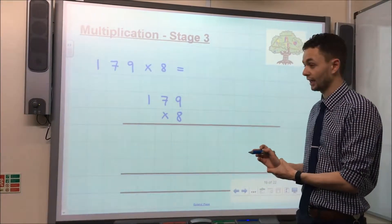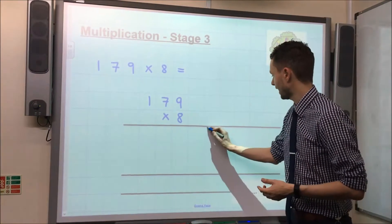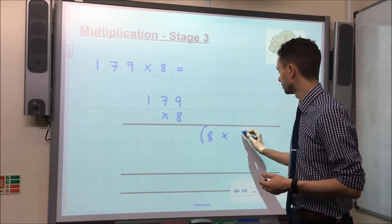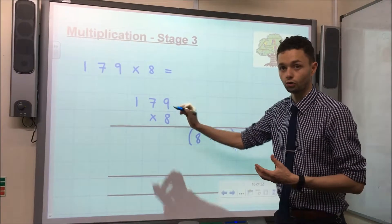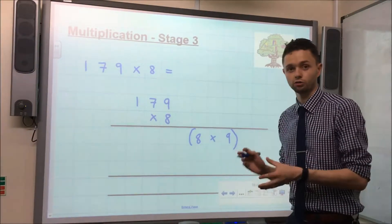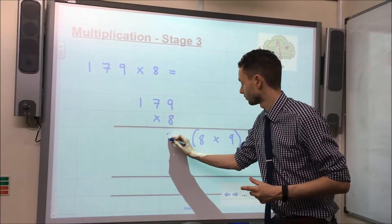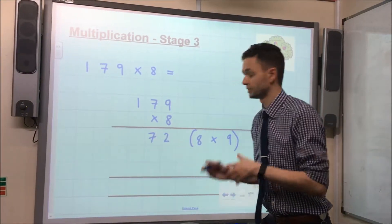The first step of the calculation is to multiply by the ones. So that's 8 multiplied by 9, which of course gives us 72, which we record underneath the calculation, making sure the numbers go in the correct place value columns. So we've got 2 ones and 7 tens, 72.